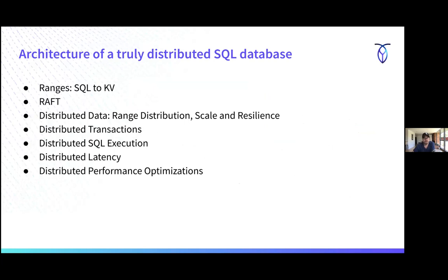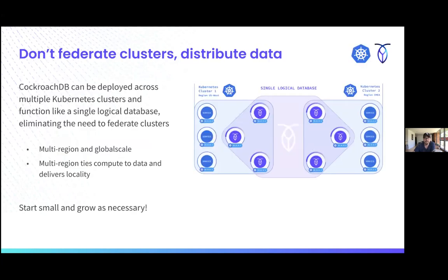To summarize, we covered: a quick overview of Cockroach, the storage layer, Raft, how we distribute data, distributed transactions, MVCC, distributed execution, latency and the speed of light, and performance optimizations. Before closing and opening for questions — when I first saw Cockroach at a CoreOS event where Alex Polvi was demonstrating Kubernetes by killing pods, the app they used was CockroachDB. That was the moment I realized: here's a database with near-zero performance impact even as you kill pieces of it.